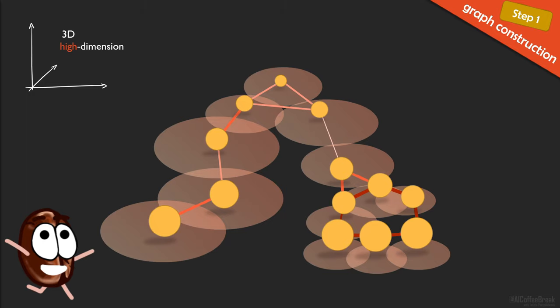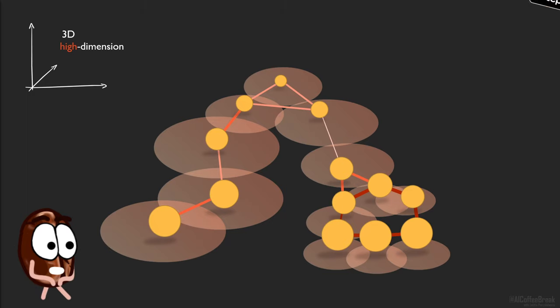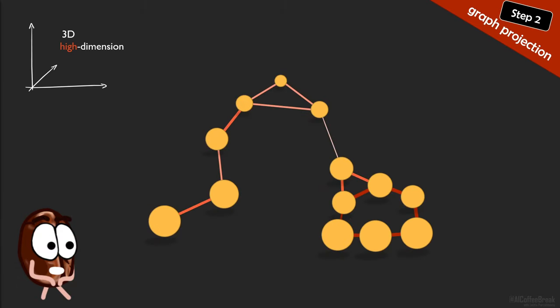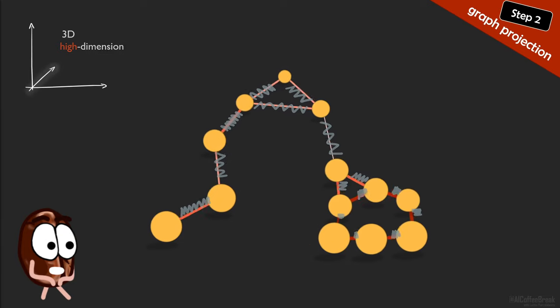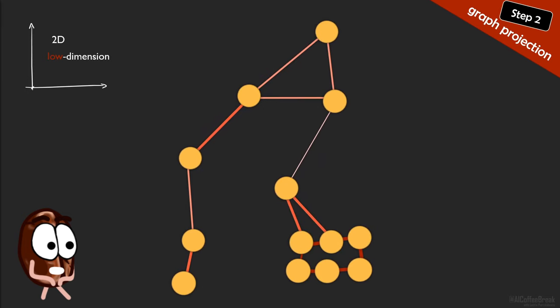This graph projection algorithm is too much for Ms. Coffee Bean to explain in detail in this video, but you can imagine this projection as taking the high-dimensional graph with their edges as being springs, where each spring is stronger as the edge probability increases. Which means that points connected by high-weighted edges are more likely to stay together in the lower-dimensional space, because the spring holds these points together.